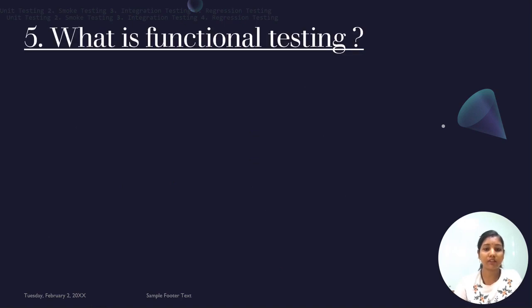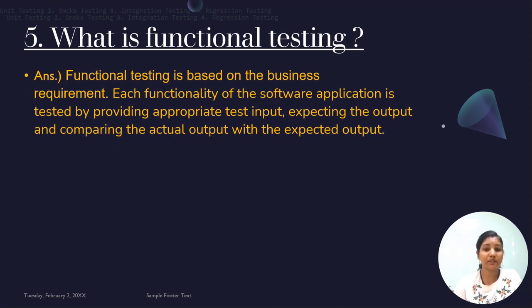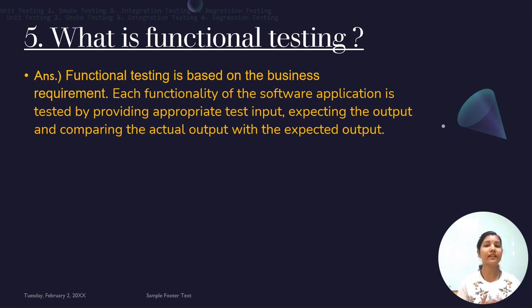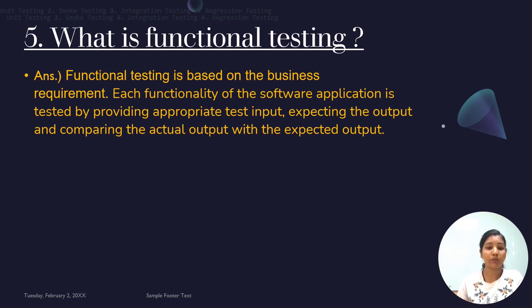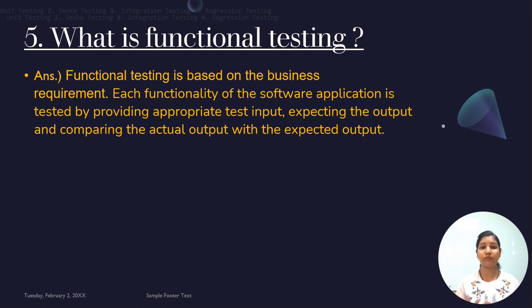Next: what is functional testing? Functional testing is based on business requirements — what exactly the application is being built for, what is its function and purpose. Each functionality of the software application is tested by providing appropriate test input, expecting an output, and comparing the actual output with the expected output. We pass some input data to the application and observe the response — whether it is as expected or unexpected.